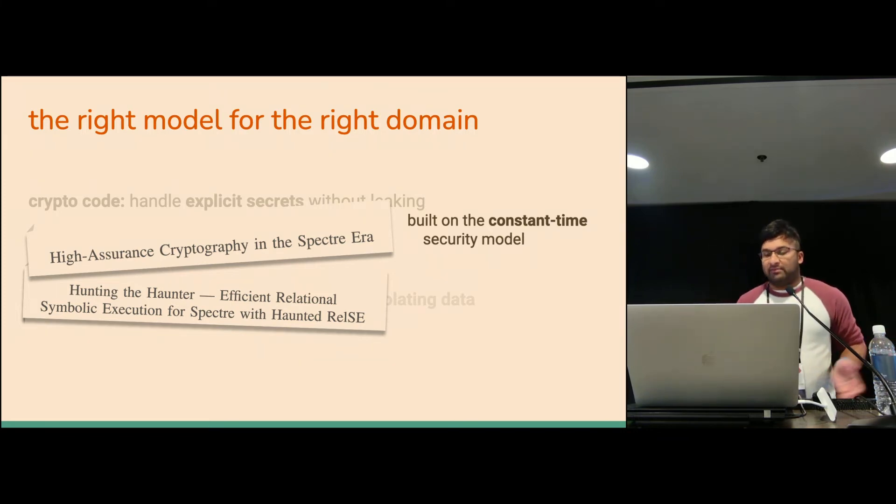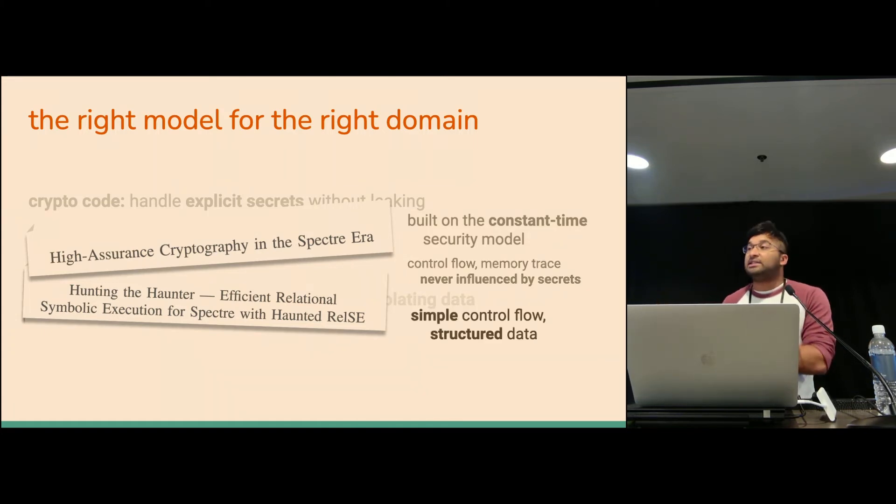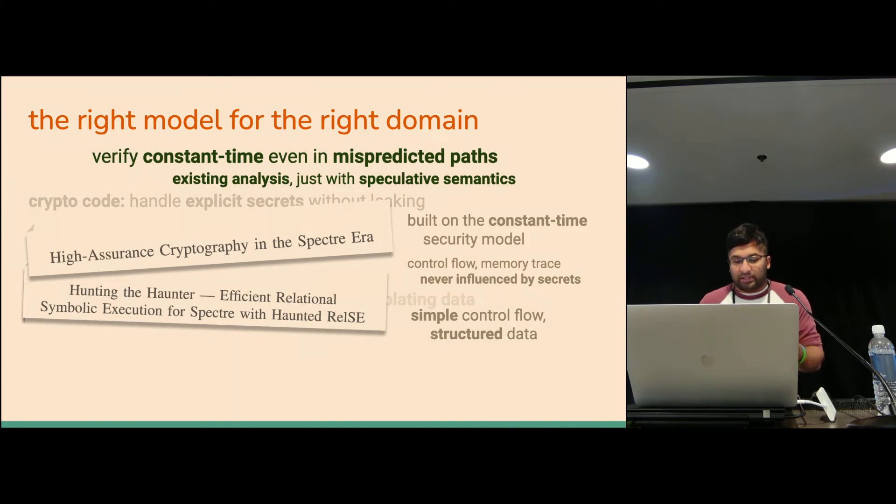Tools like the ones developed in High Assurance Cryptography and in Hunting the Haunter build on top of existing practices that we've been using to secure cryptographic code. Before all of the Spectre stuff came out, there was already a great deal of interest in preventing timing side channels in cryptographic code using what we call the constant time security model. In the constant time security model, the control flow of the program and the memory trace should not be affected at all by secrets. That's how you prevent leakage of these secret values. These tools take that idea of constant time leakage and translate it to speculative execution. They can do a pretty powerful analysis because we know that cryptographic code generally has very simple control flow and very structured data. There isn't a whole range of mispredictions that can happen. They can actually feasibly analyze the different mispredicted paths.